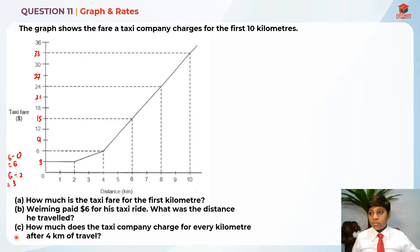Now let's solve part A. They are asking us the taxi fare for the first kilometer. The first kilometer is over here, so I'm basically going to draw a line up. The first kilometer is actually connected to $3. Just like 2 kilometers is also connected to $3, the first 2 kilometers cost $3.